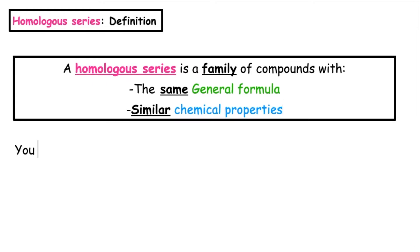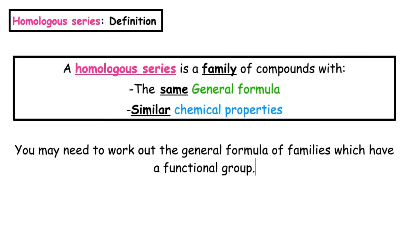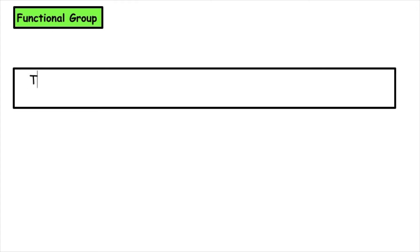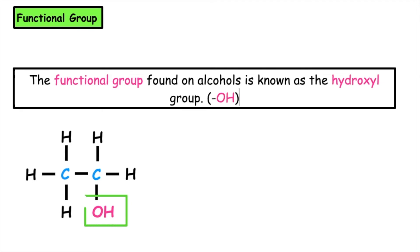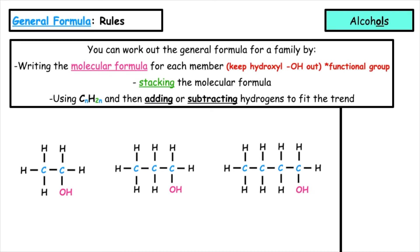You may need to work out the general formula of families which have a functional group. Today we're going to look at the family known as the alcohols. The functional group found in alcohols is the hydroxyl group. We can see that all of these molecules have an OH, which is our hydroxyl group.